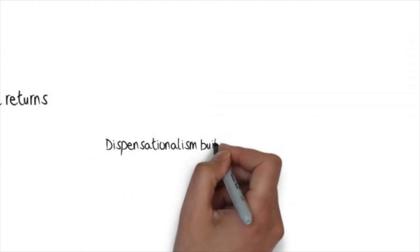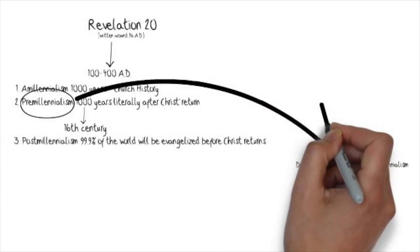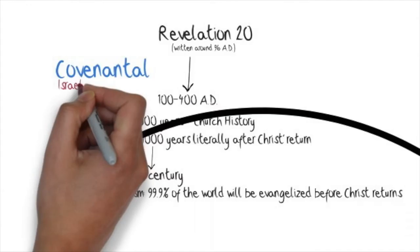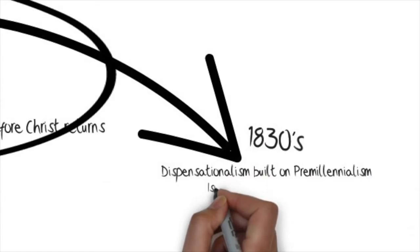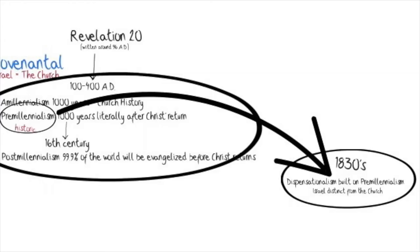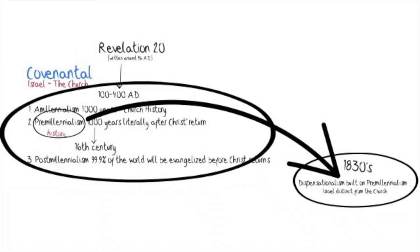Darby and the Dispensationalists built this system of theology around the premillennial model. But it is important to note that historic premillennialism is covenantal theology, which sees Israel and the church as being one in Christ. Whereas dispensational theology is based on the idea that there are two different people of God, two different plans, and that Israel and the church must remain separate and distinct. So while premillennialism has always been an idea in the Christian faith, dispensational premillennialism is not the same as historic premillennialism.